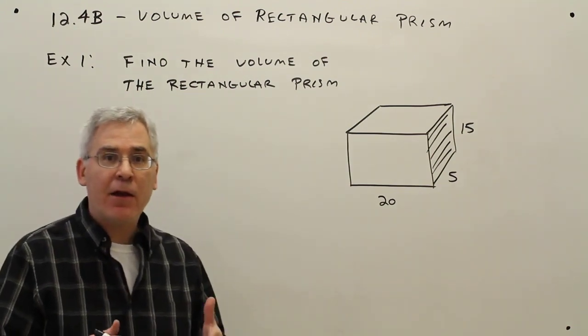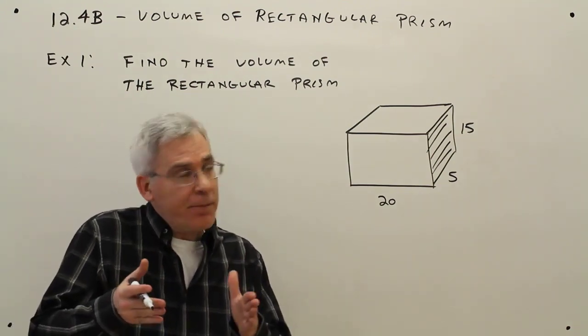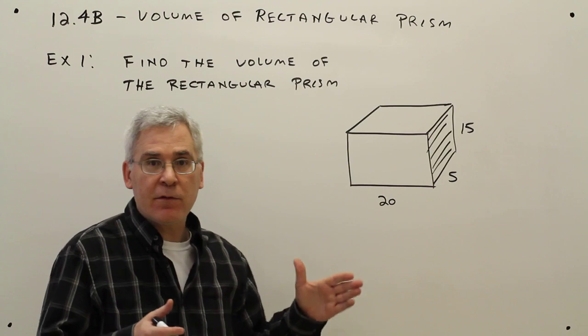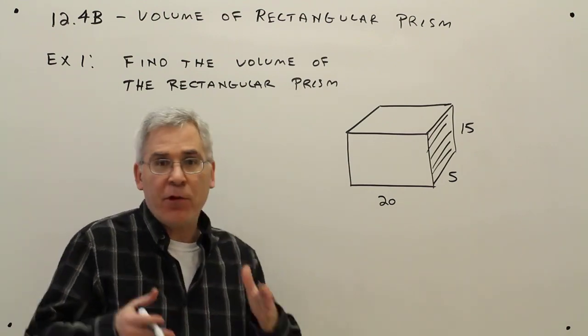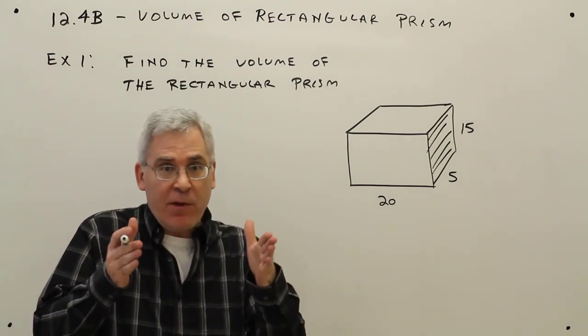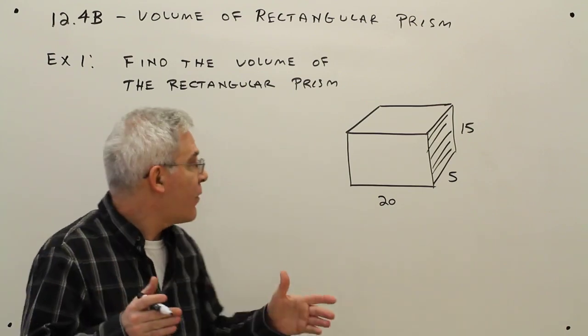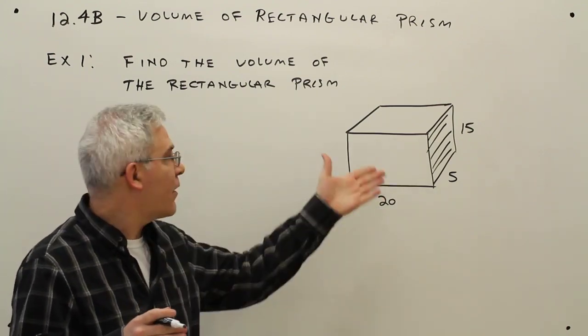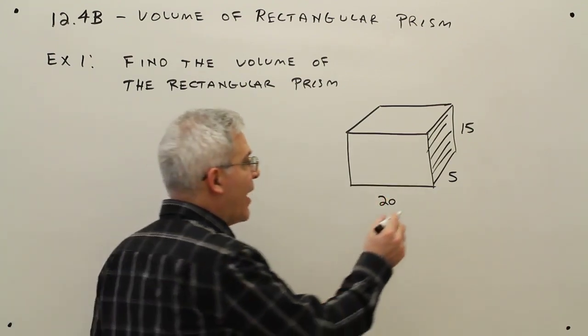Recall that any two faces of a rectangular prism can be called the base. They just have to be parallel and congruent. So, since this one is colored in, I'll call this the base.